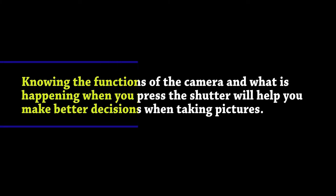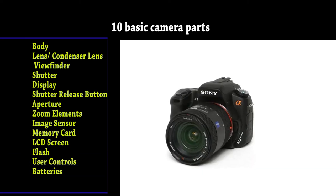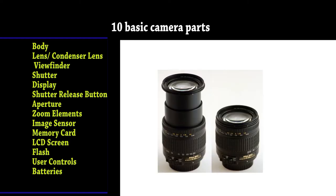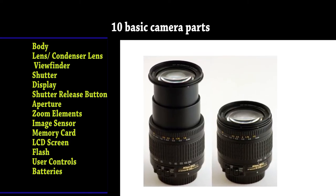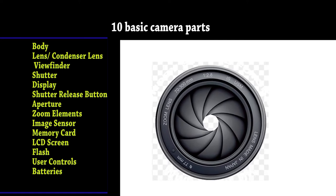Knowing the function of the camera and what is happening when you press the shutter will help you make better decisions when taking pictures. There are more than 10 basic camera parts to identify in today's digital world. Whether you have a digital compact or a digital SLR, these parts will inevitably be found on most cameras.